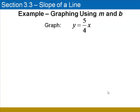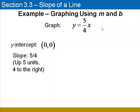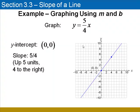Now we'll graph the line y equals 5/4 x. Notice that there's no constant term after the x-term. That tells us that our y-intercept is at the origin, (0, 0). The slope is 5/4, so we know that this line moves up 5 units for every 4 that it moves to the right. Begin by plotting the y-intercept at the origin, count up 5 units and 4 to the right, then draw the line that passes through these two points.